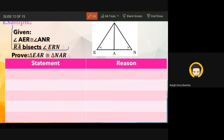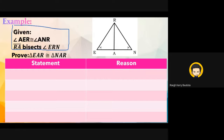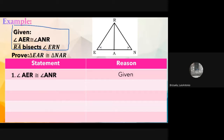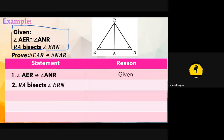First statement: Bersuela answers — angle AER is congruent to angle ANR, reason: given. Second statement: Pasigas answers — RA bisects angle ERN, reason: given. There is no more given, so look at the figure.